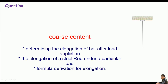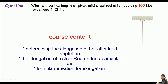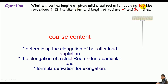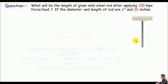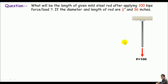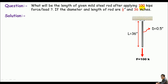Assalamu alaikum, myself SLK. The question is: what will be the length of a given mild steel rod after applying a 102 kips force as an axial load? The diameter of the rod is 0.5 inches and the length is 36 inches. We just need to find the elongation of this bar after load application.